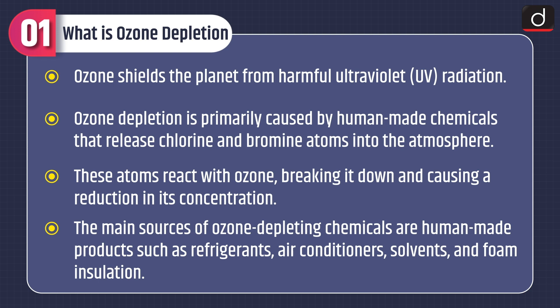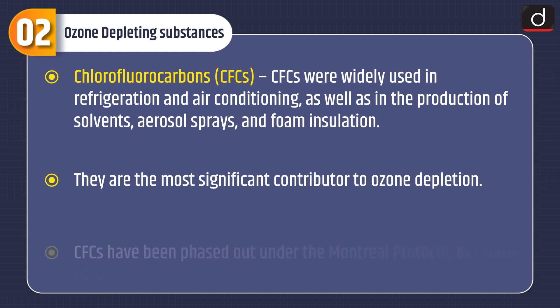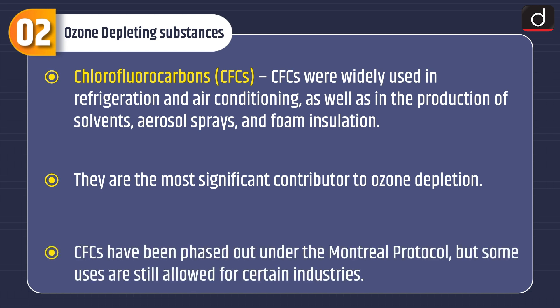The main sources of ozone depleting chemicals are human-made products such as refrigerants, air conditioners, solvents and foam insulation. The first ozone depleting substance is chlorofluorocarbons or CFCs. CFCs are widely used in refrigeration and air conditioning as well as in the production of solvents, aerosol sprays and foam insulation. They are the most significant contributor to ozone depletion. CFCs have been phased out under the Montreal Protocol, but some uses are still allowed for certain industries.